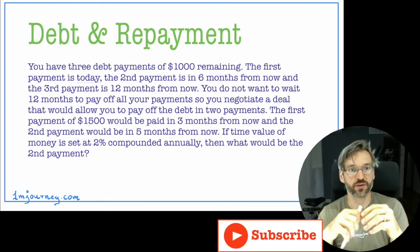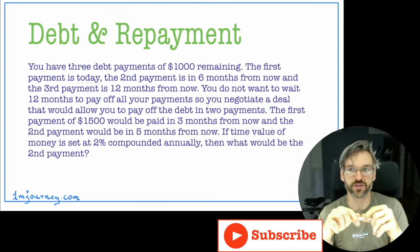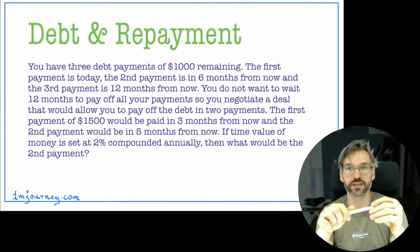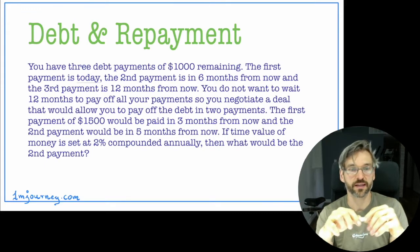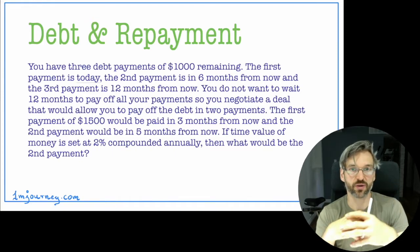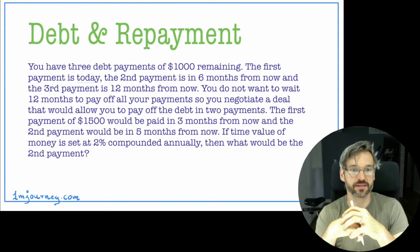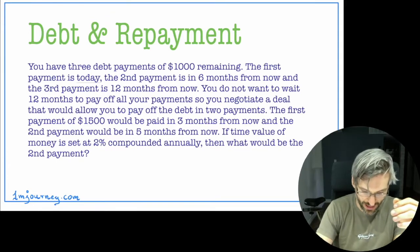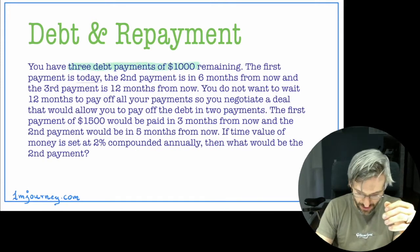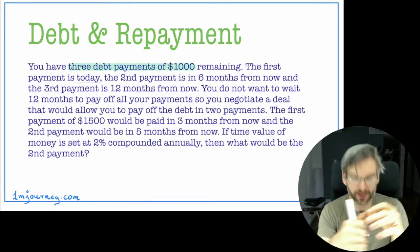In this video I will go over a particular example. It's a little bit more challenging but it will really test you if you understand equivalent values or not. It will be on debt and repayment. So you have three debt payments of $1,000 remaining — so three debt payments, $1,000 each remaining.